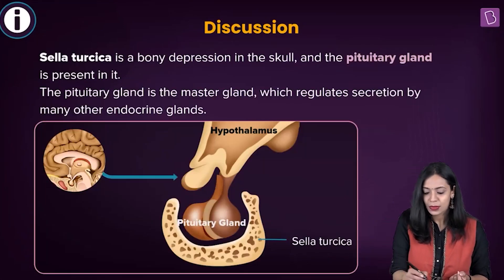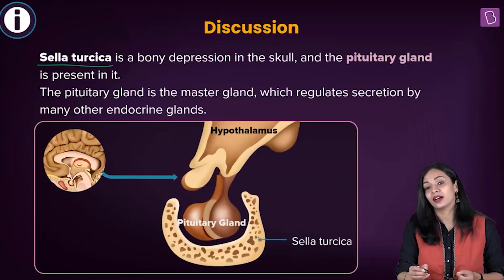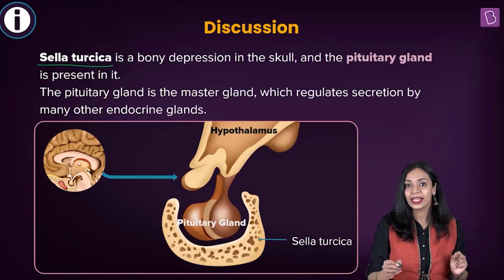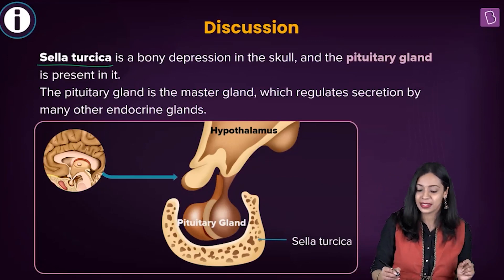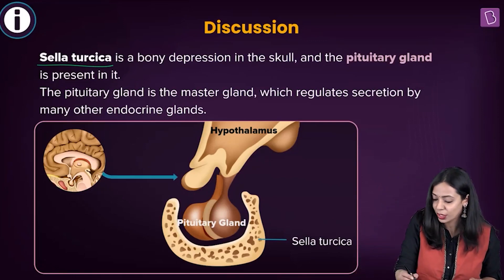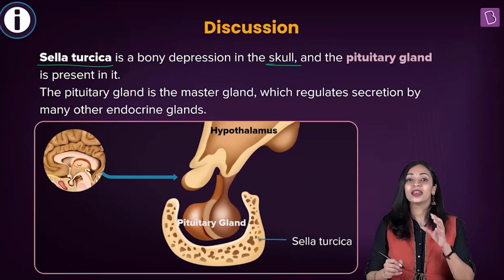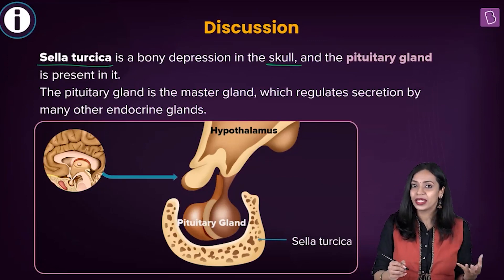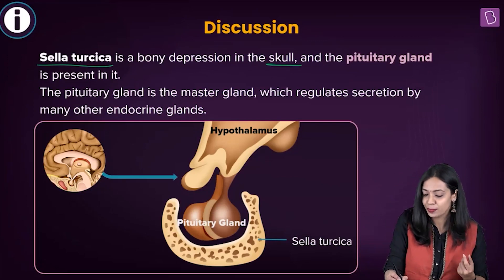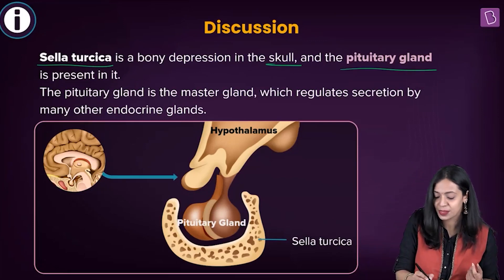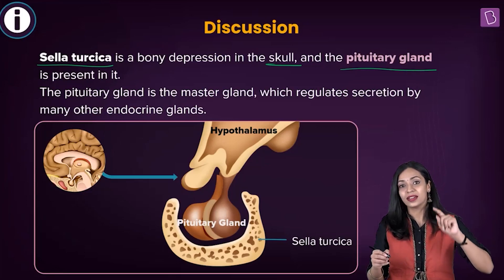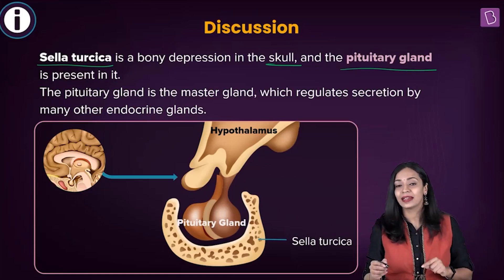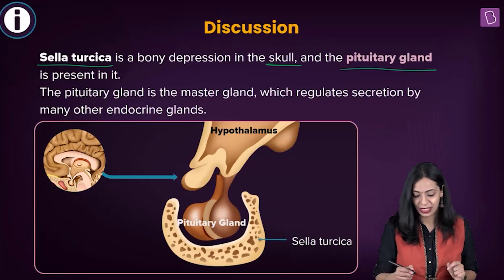Sella turcica was one of the options. Sella turcica is a bony cavity present in the sphenoid bone of our skull. It is within this bony cavity that the pituitary gland is present. So sella turcica is the location of the pituitary gland, not the pineal gland.